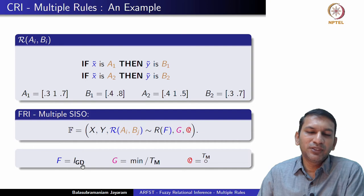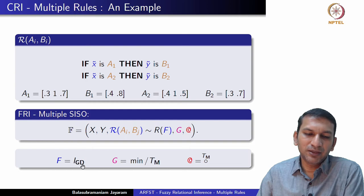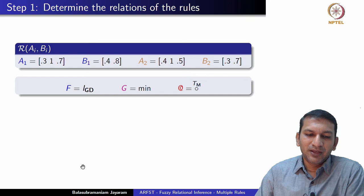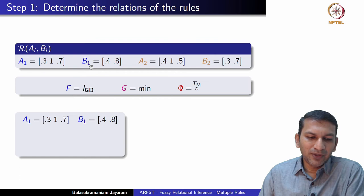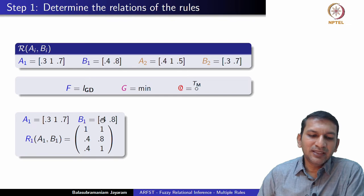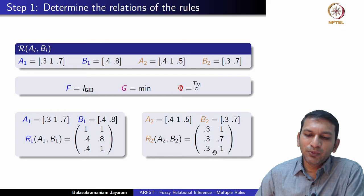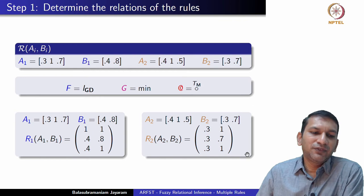So we consider G to be the minimum T-norm. Since we are using CRI, the composition automatically becomes sup-T. The first step is to determine the relations for each rule. Given A1, B1 and using the Gödel implication, we obtain relation R1 — this is the same calculation we did before. Similarly, using A2, B2 and the Gödel implication, we obtain relation R2. We now have two relations R1 and R2 representing the two rules.